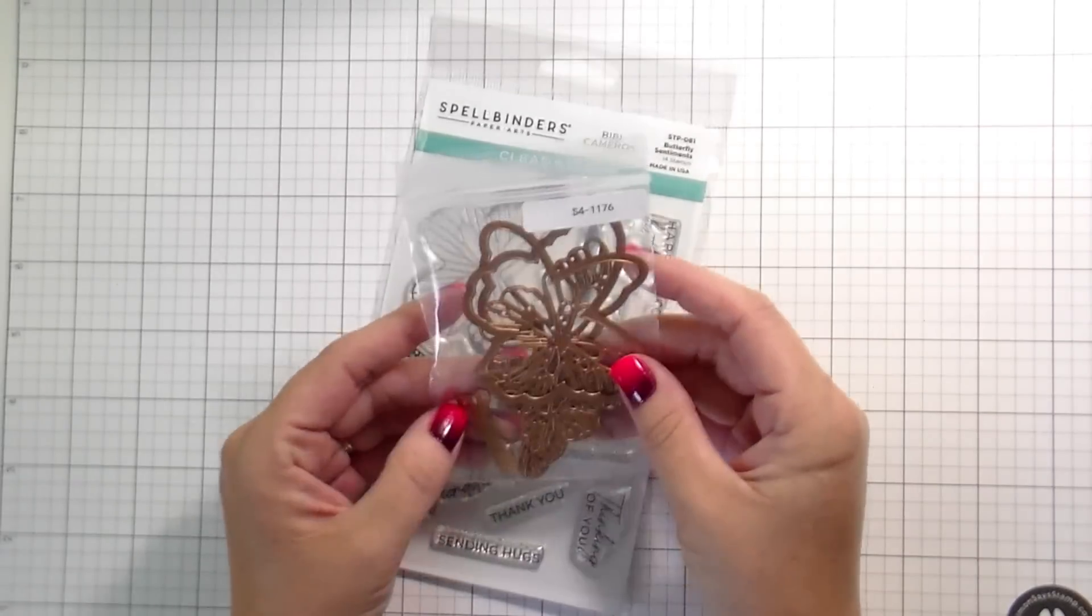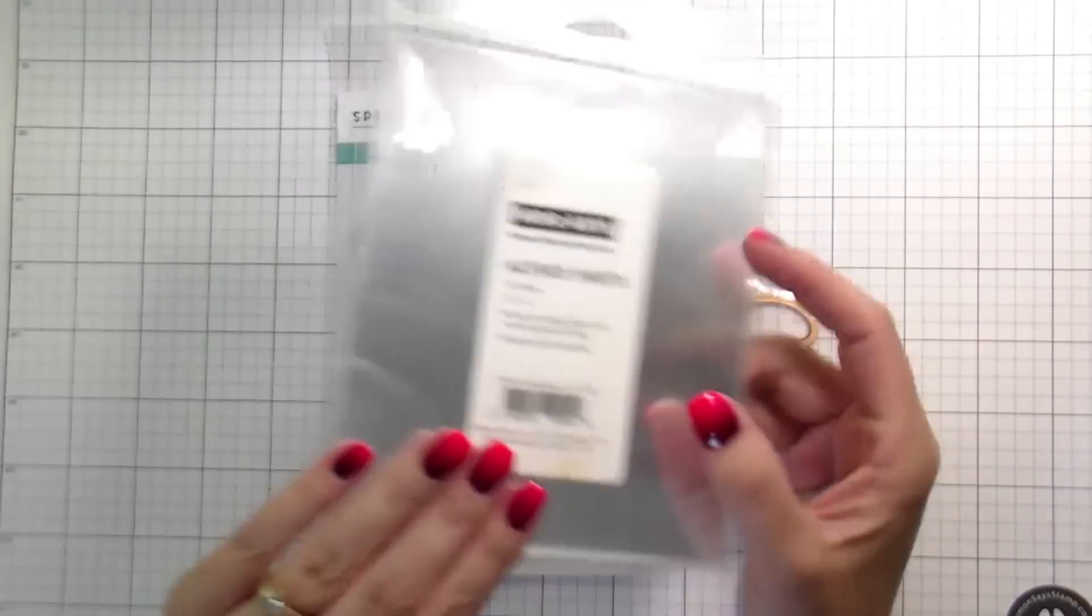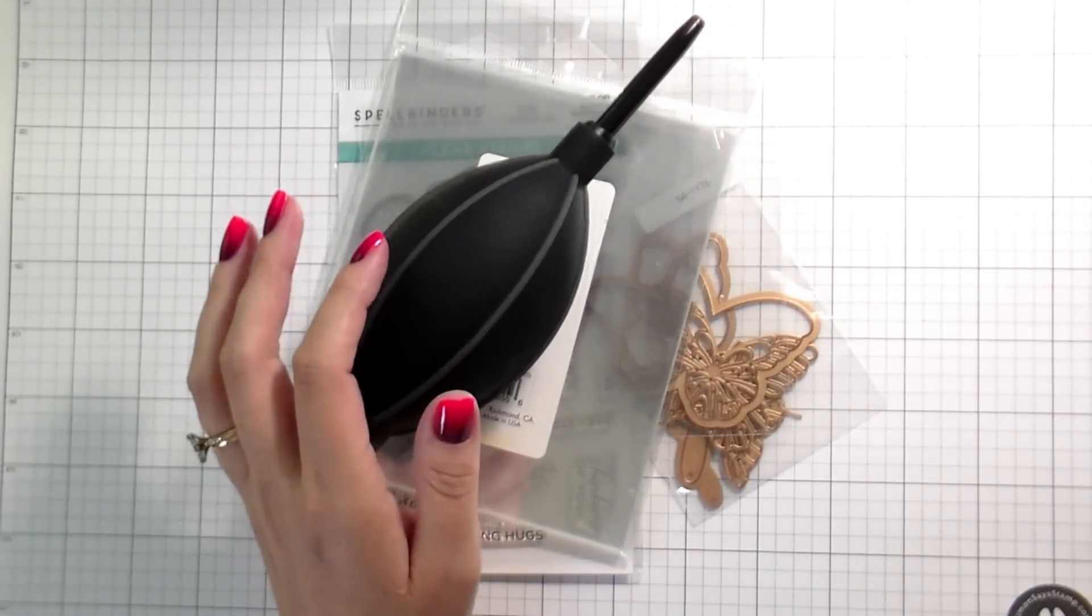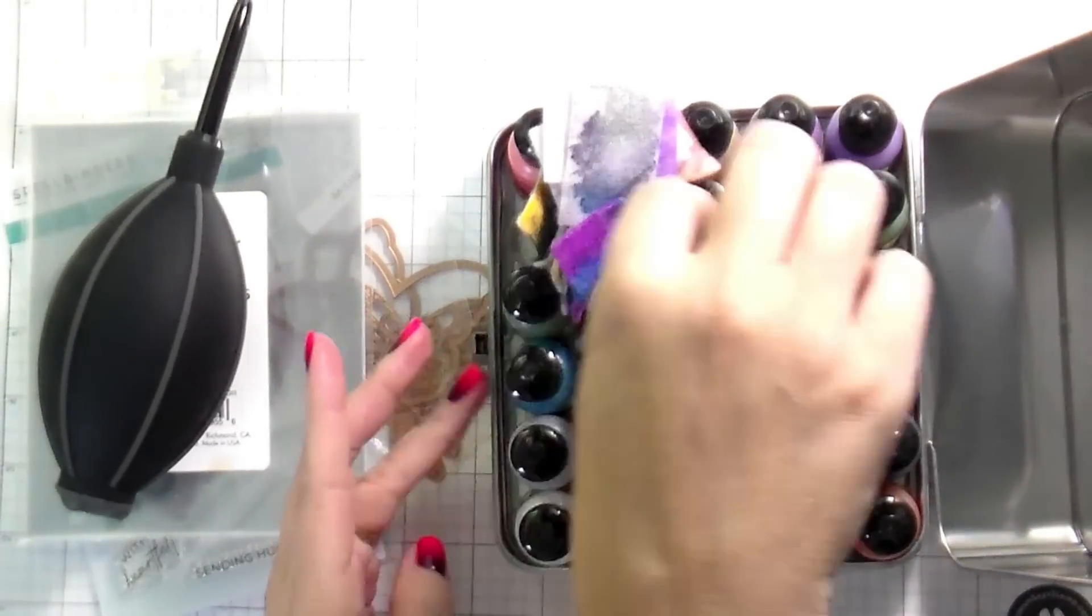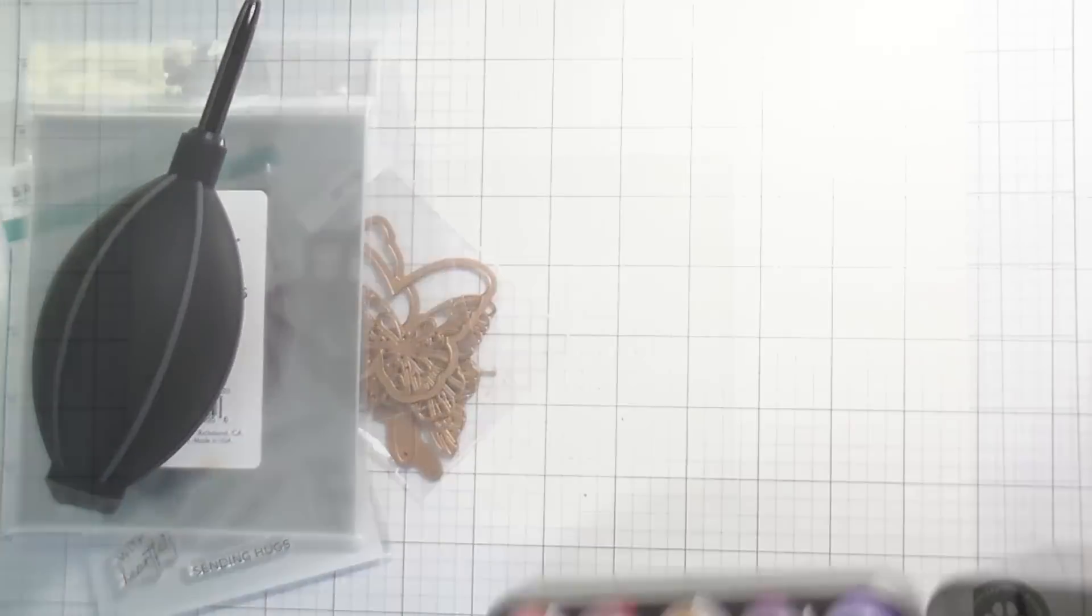Just before we get into the card, just because today is the last day, Spellbinders is having a sizzling summer die sale. They're like 40% off. The dies that I use today are part of that sale. They're on sale for $16.50 where they're normally I think $21.99.